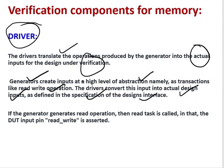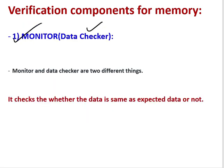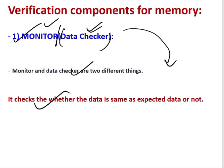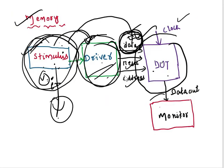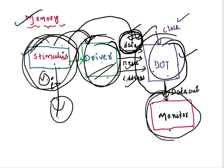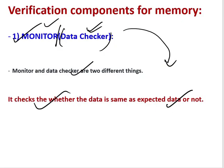The next component is the monitor or data checker. Monitor and data checker are two different things. The monitor collects the output of the DUT. Whatever data we get as output from this memory module is collected by this monitor. Then we can check whether the data we got out of this DUT is the actual data we are expecting or not. It checks whether the data is same as expected data.